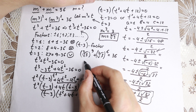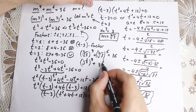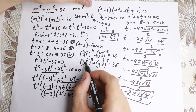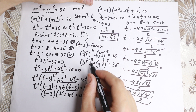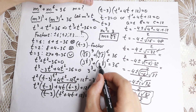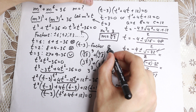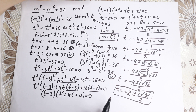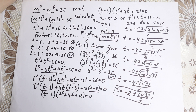Writing the cube root of 3 as 3 to the one-third: 3 to the one-third raised to the ninth power plus 3 to the one-third raised to the sixth power. Multiplying exponents: one-third times nine is three, and one-third times six is two. So we get 3-cubed plus 3-squared, which is 27 plus 9, equal to 36. Our answer is confirmed: m equals the cube root of 3.